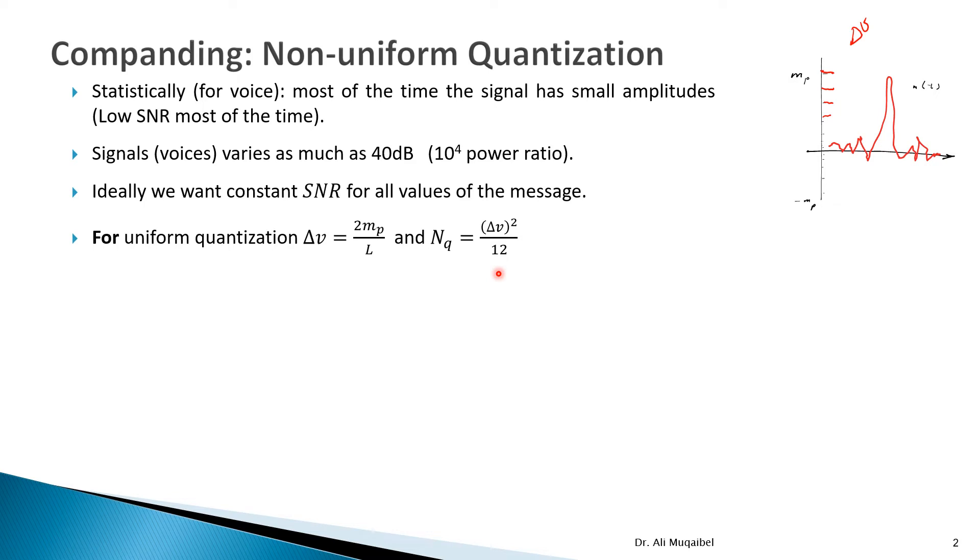Recall first that for uniform quantization, assuming uniform signals, the derivation that we have done, we found that the error, the noise part, depends on the spacing delta nu. So it's delta nu square over 12. We have done this derivation in the previous slides. That's to say, the error depends on the spacing. So if we keep the spacing like this, we get delta nu, which is the error, fixed. Is there anything we can do about it? The answer is yes.